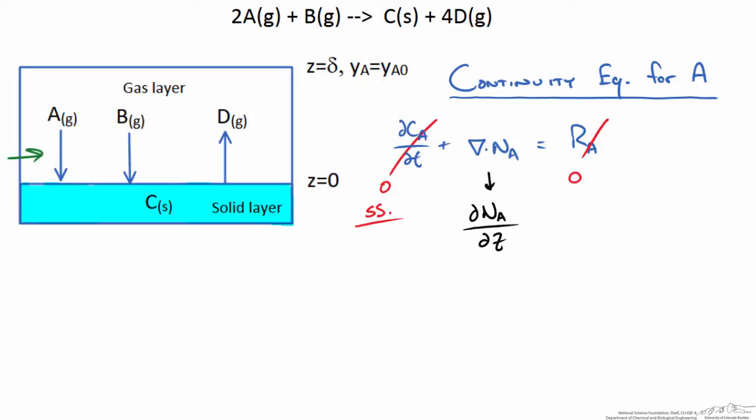This is important. The reaction term, this RA, is on a per volume basis within the control volume. In this case our control volume is this space, this gas layer which we are looking at. Since the reaction is not occurring within that control volume where we are examining the flux, this reaction term is 0.